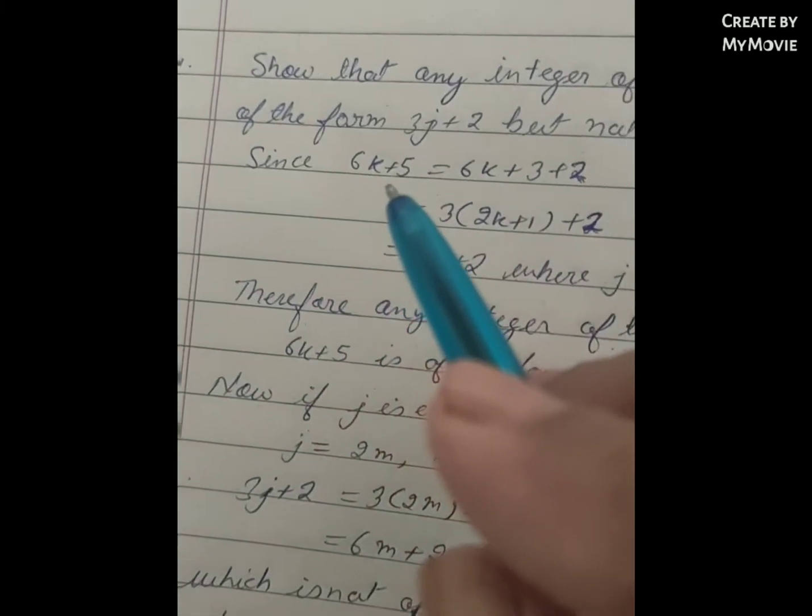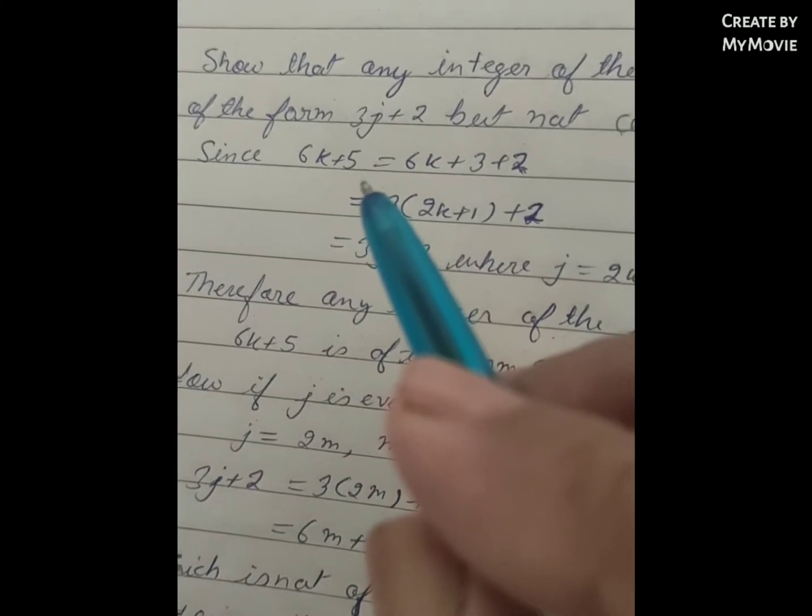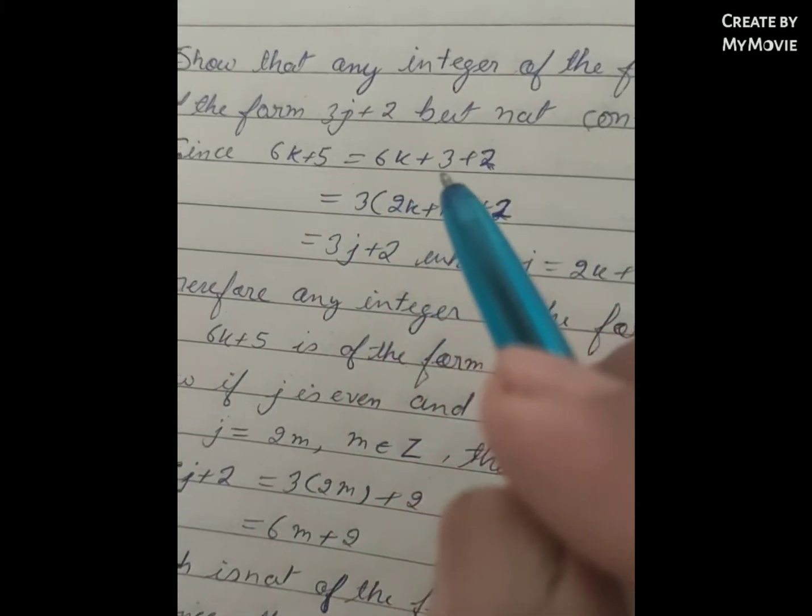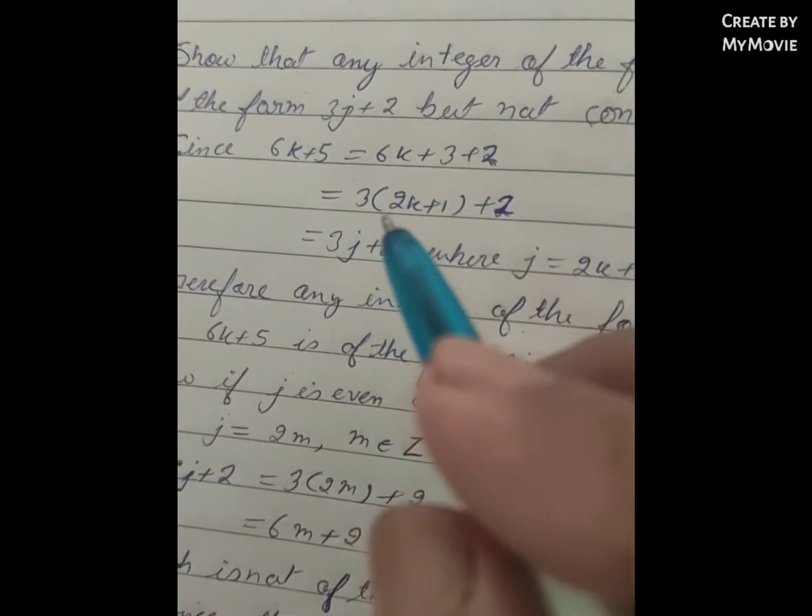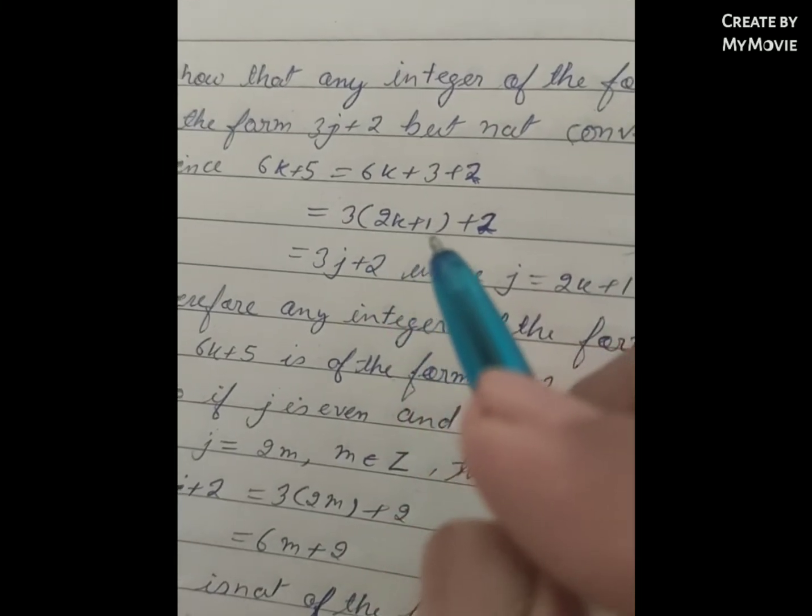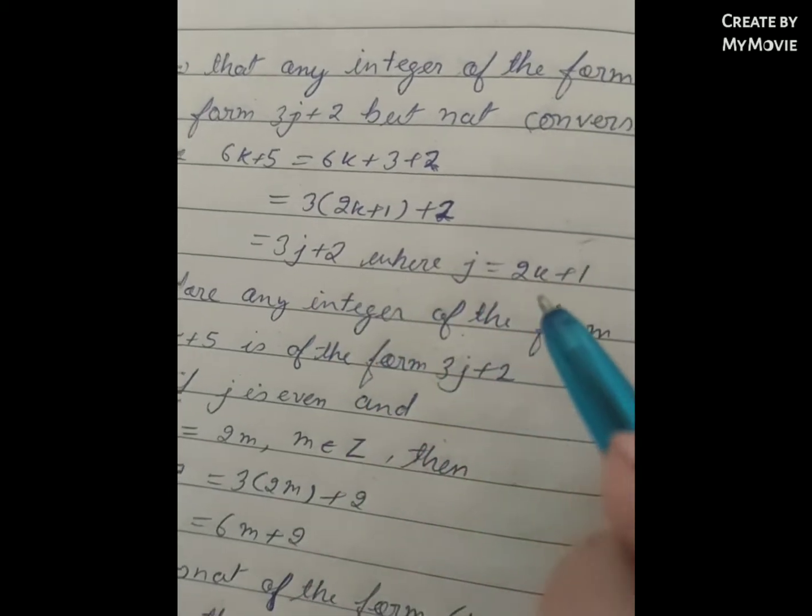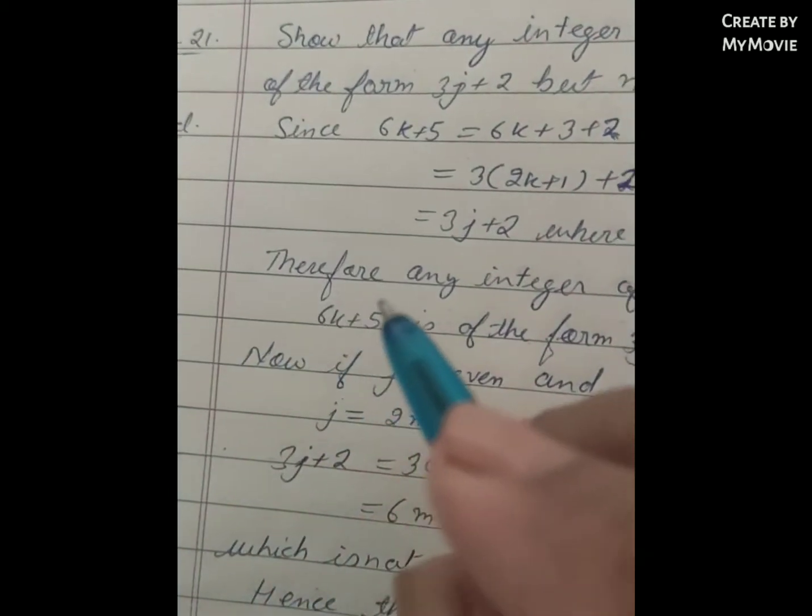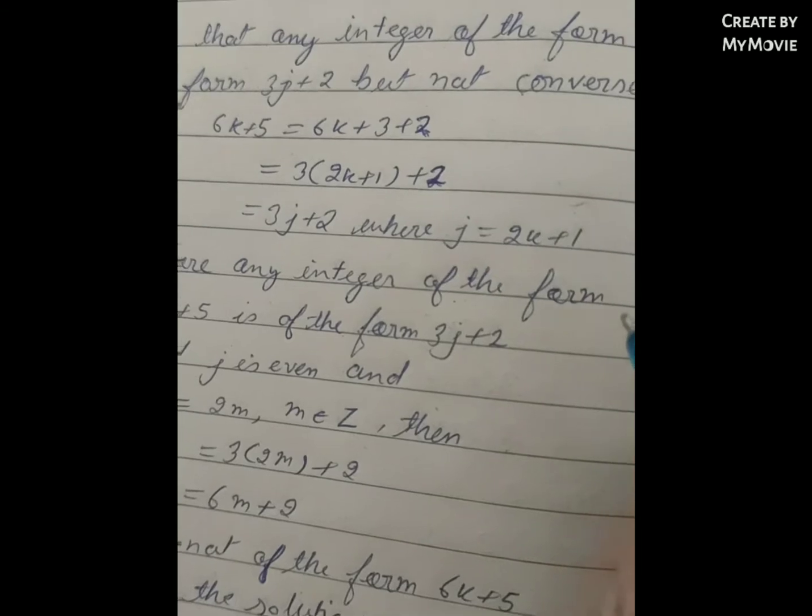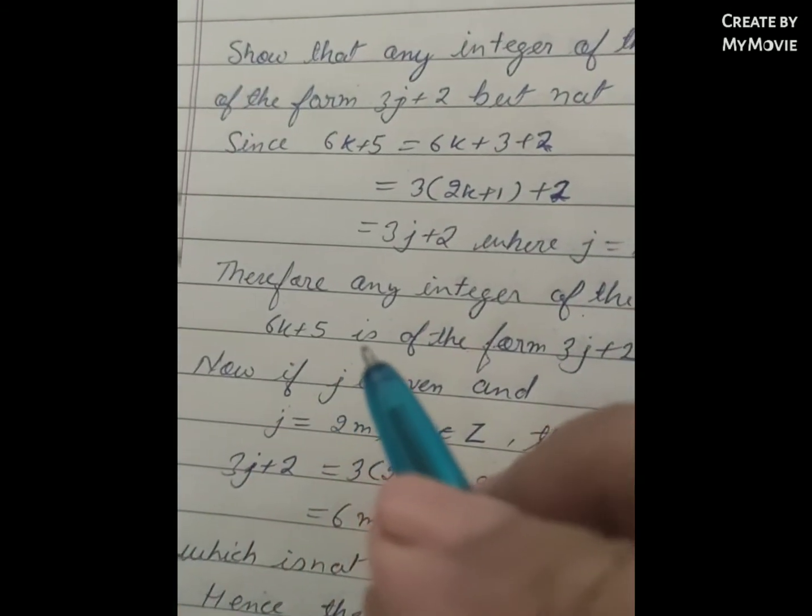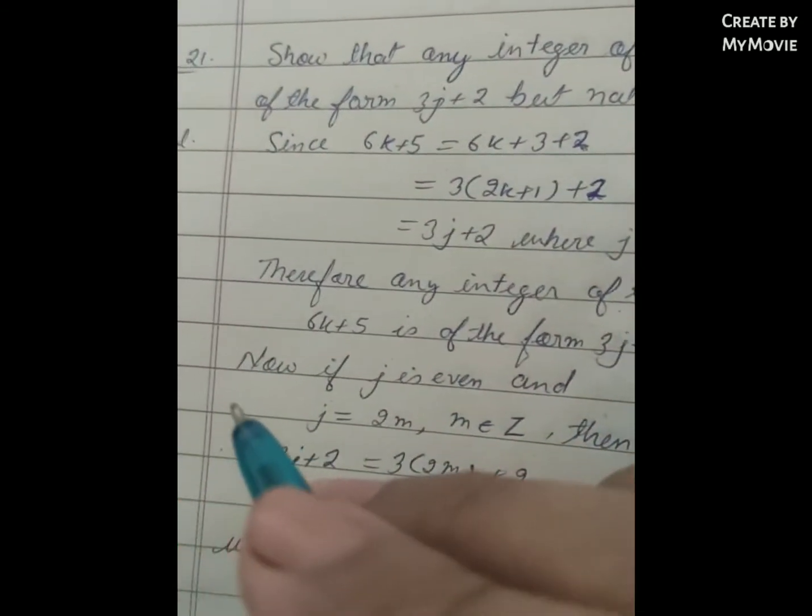Now since 6k plus 5 is equal to 6k plus 3 plus 2, that is equal to 3 bracket 2k plus 1 bracket close plus 2, which is equal to 3j plus 2, where j is 2k plus 1. Therefore any integer of the form 6k plus 5 is of the form 3j plus 2.